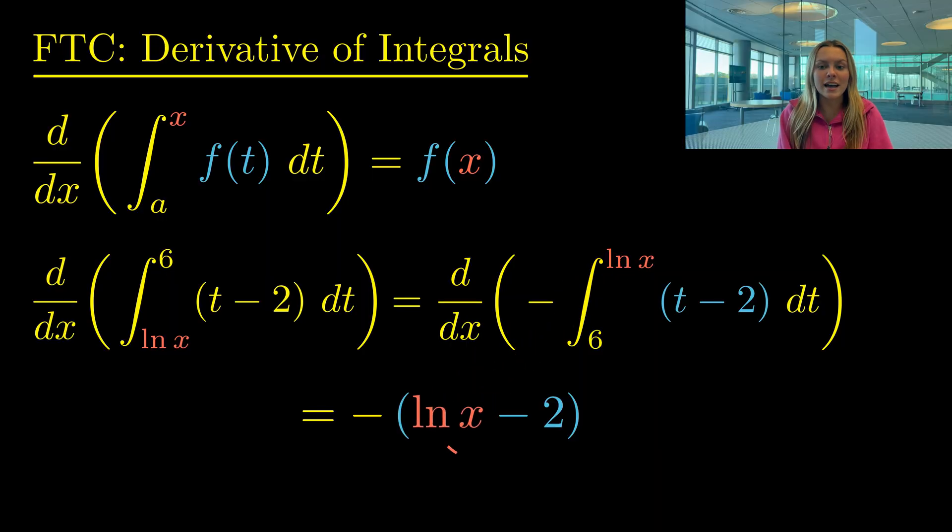But don't chain too early, as some might mistakenly put the derivative right next to ln(x). Instead, like usual for the chain rule, we multiply by the derivative of ln(x), which is 1/x, at the very end of our derivative expression. So our final answer is negative (ln(x) minus 2) times 1/x. Hopefully you can see that these derivatives of integrals are pretty easy as long as you remember the chain rule.